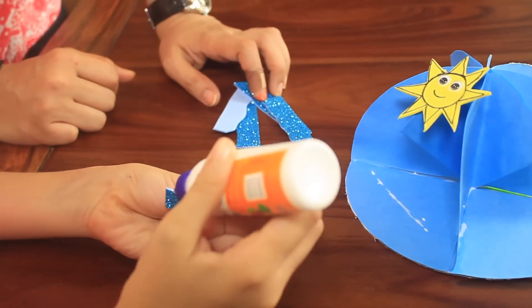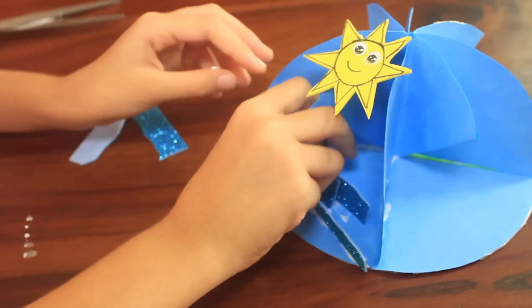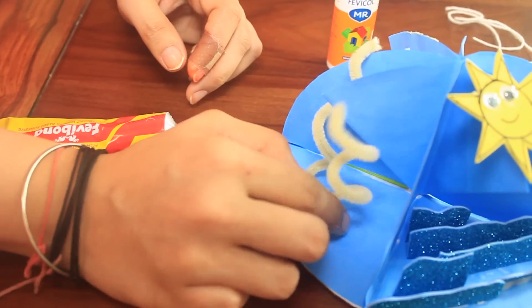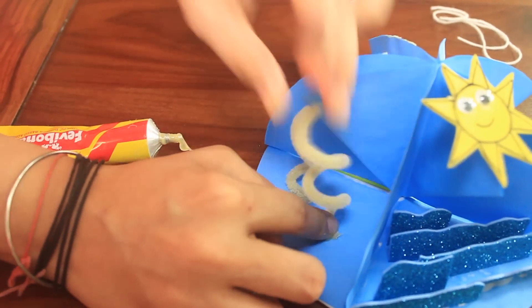On the blue base, cut out sun and waves out of foam paper. Stick cotton for clouds and spiral pipe cleaner showing evaporation waves out of foam.